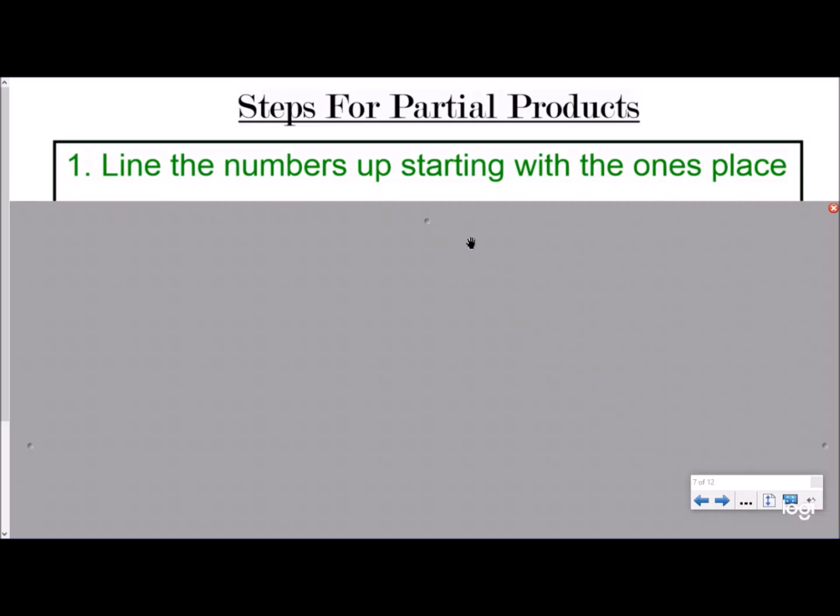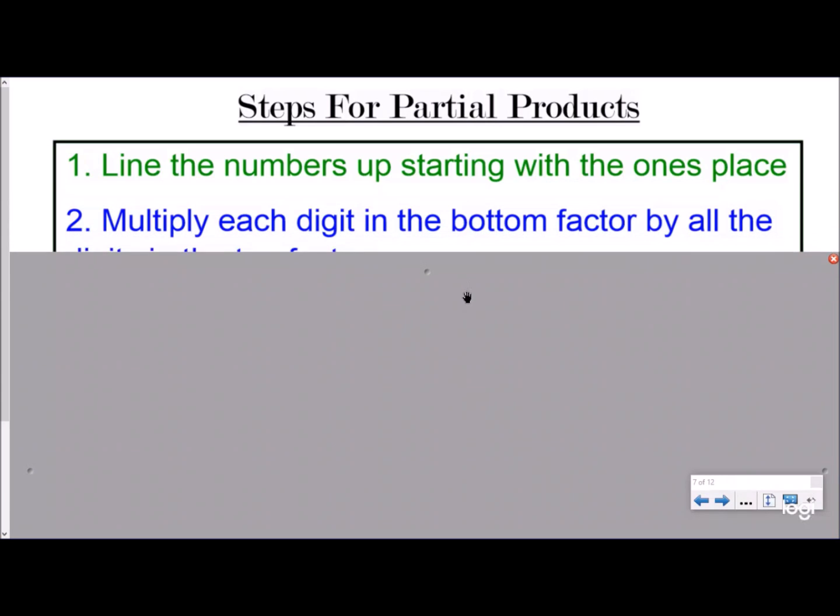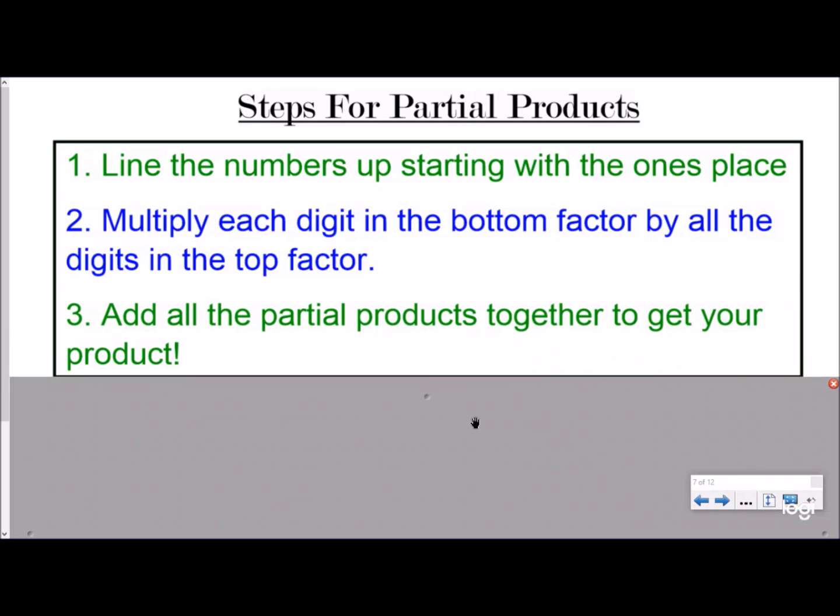Your steps for this: you're going to line the numbers up starting with the ones place, which is why it's similar to the standard algorithm. You multiply each digit in the bottom factor by all the digits in the top factor, just like you would for the standard algorithm. And then you're going to add all the partial products together to get your product. If these don't make sense, hopefully as we do an example, we'll kind of see what we're talking about.